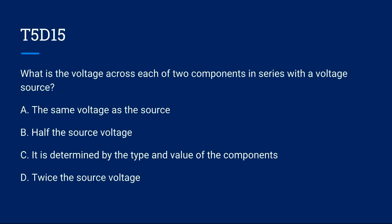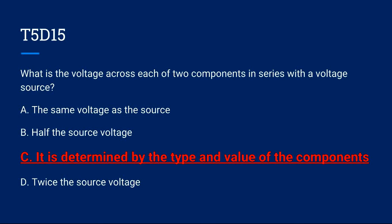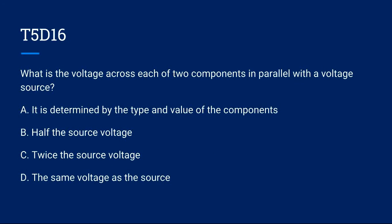T5D15: What is the voltage across each of two components in series with a voltage source? A. The same voltage as the source, B. Half the source voltage, C. It is determined by the type and value of the components, or D. Twice the source voltage. Correct answer is C. It is determined by the type and value of the components.